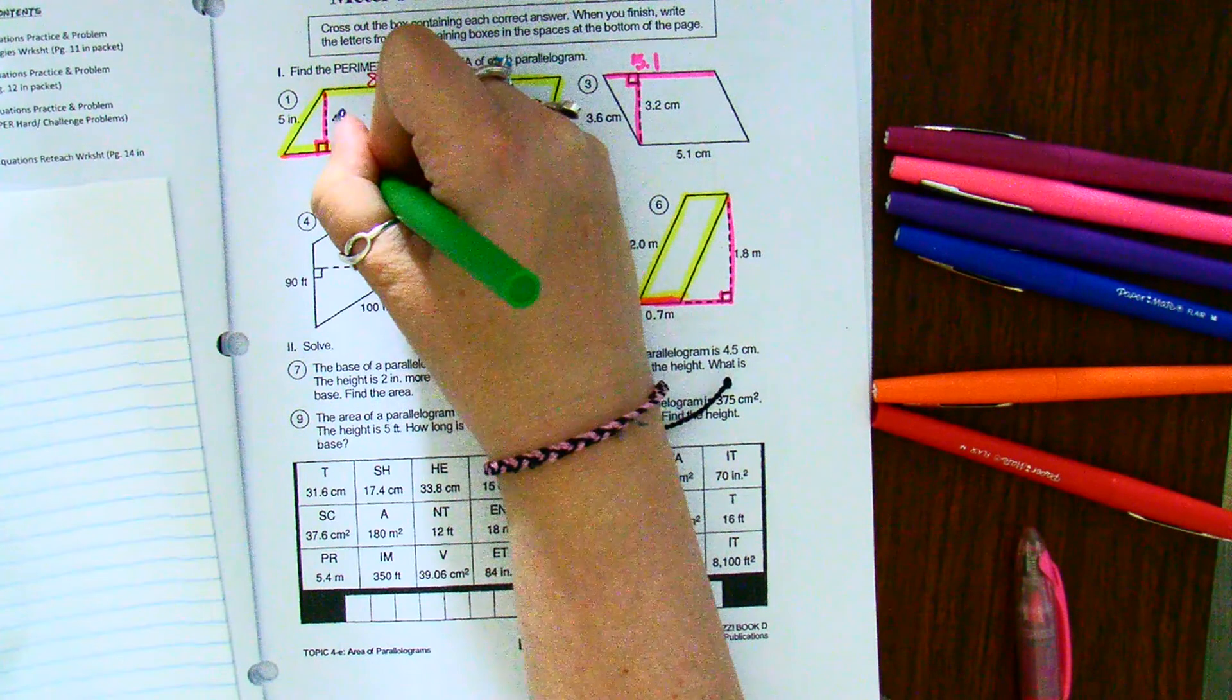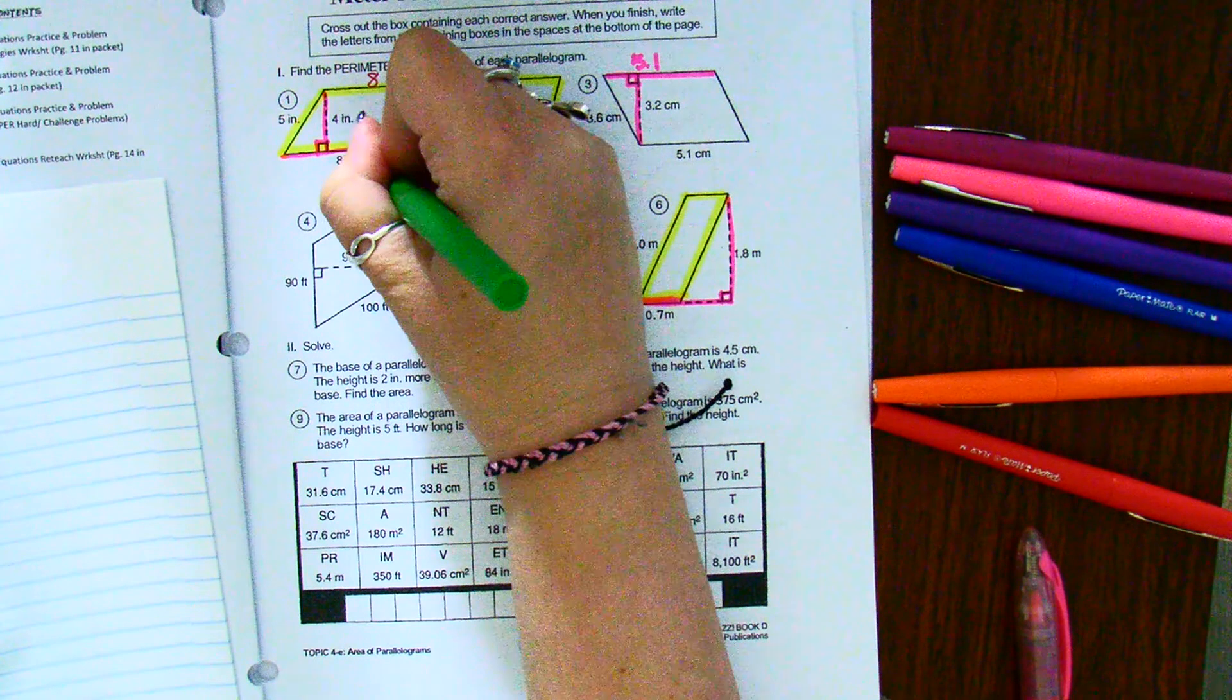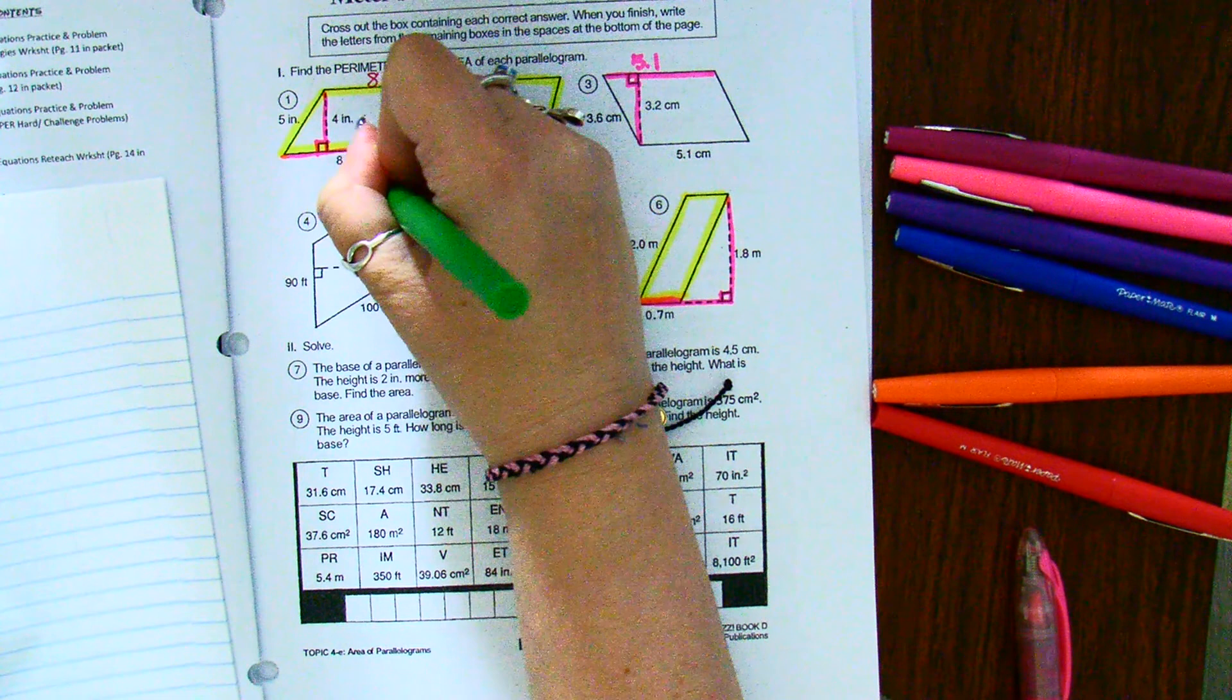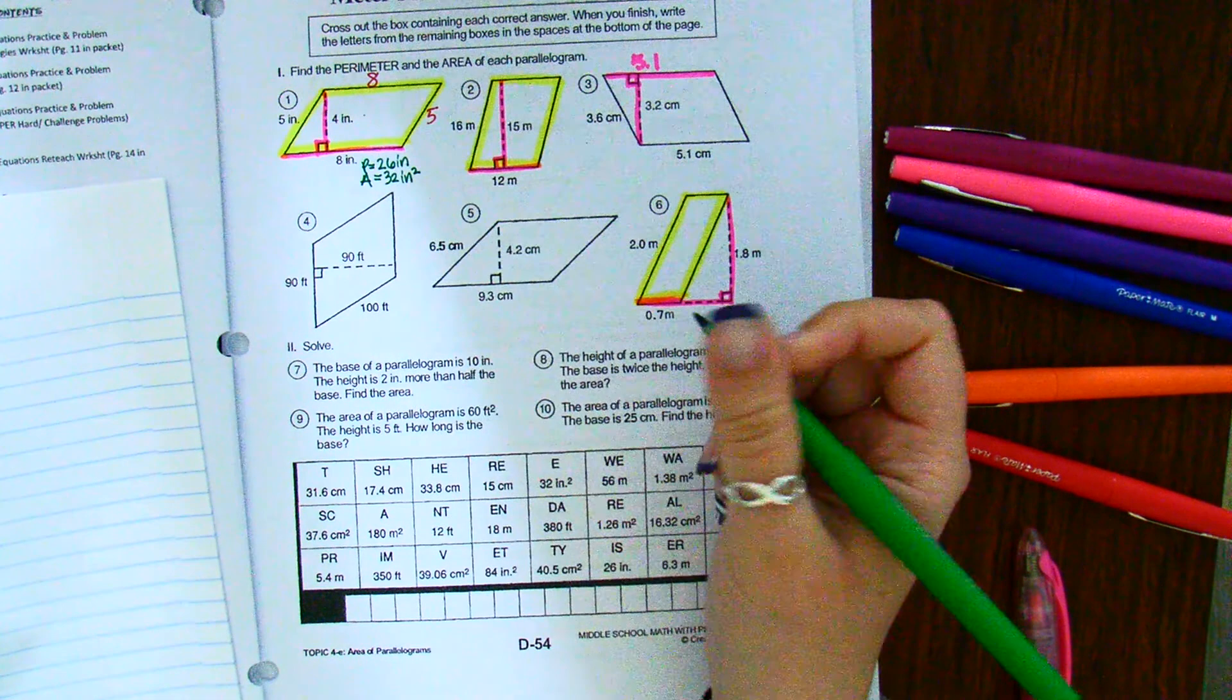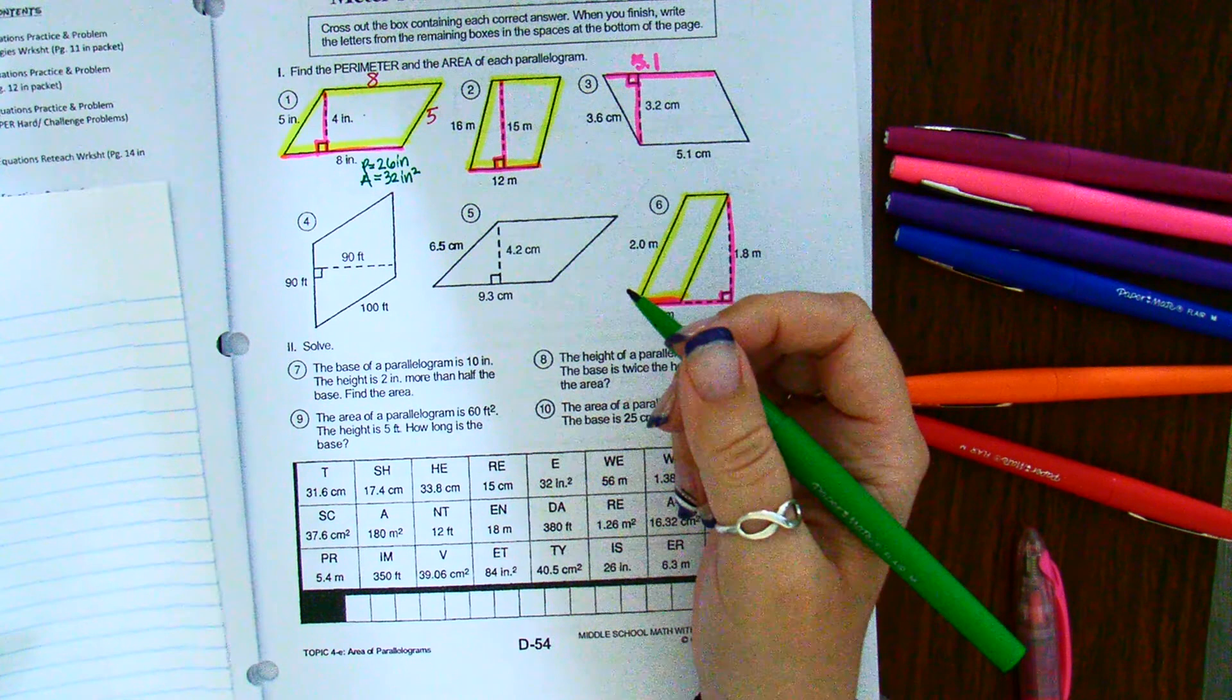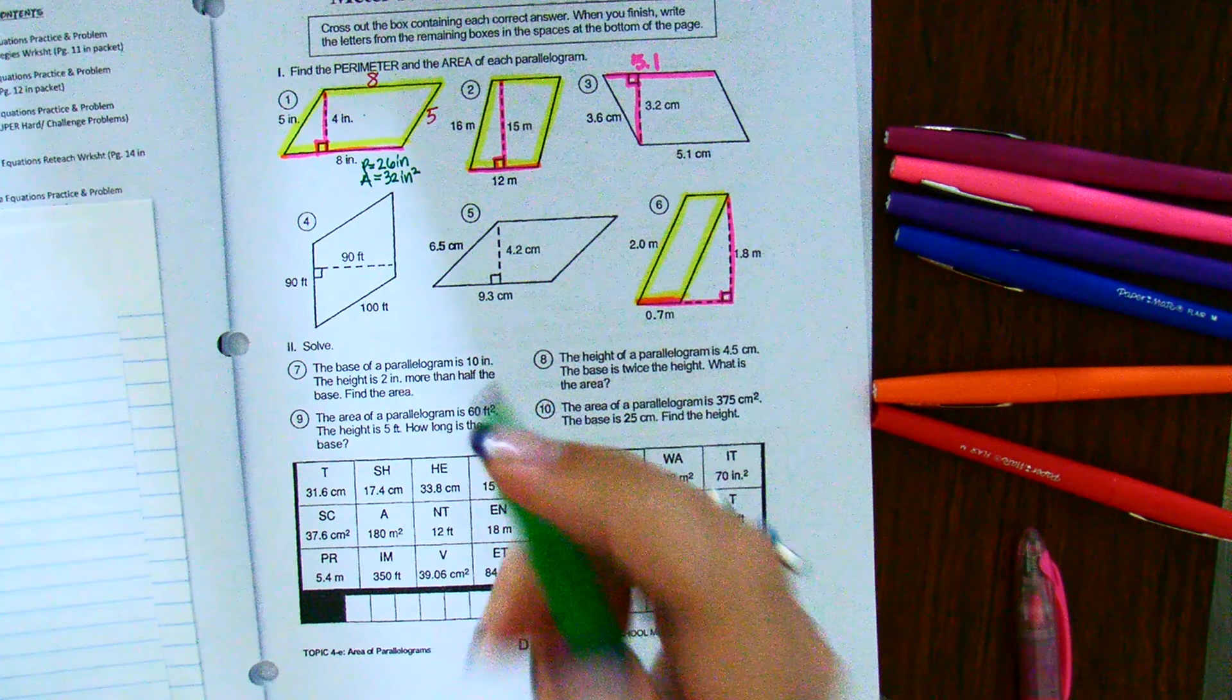But how I write my answer on my sheet, maybe I would write just the perimeter as 26 inches, and my area is 32 inches squared. But all my work is either in my journal or on a separate sheet of paper. And then down at the bottom right here.